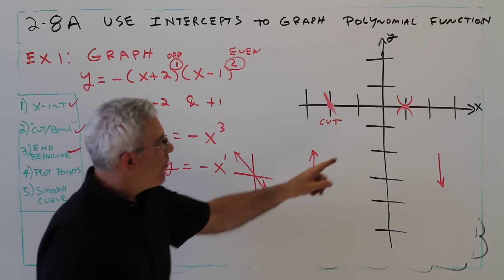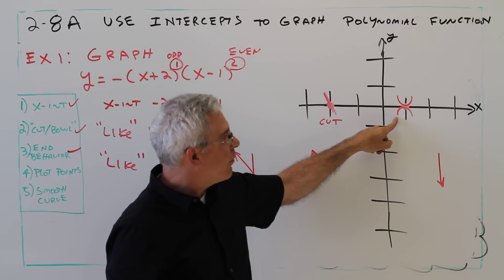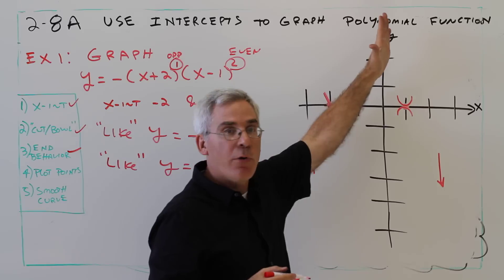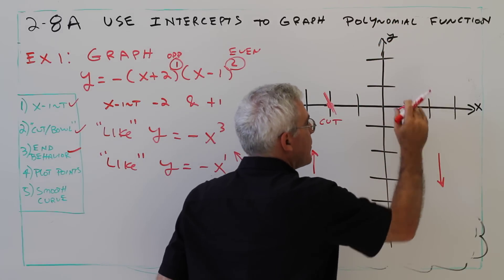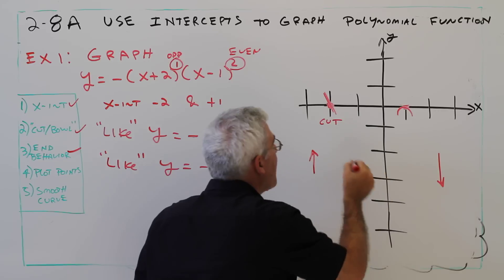So now I know that this is the correct bowling pattern. Because if it's going to be going down here, it can't be bowling up forever. So it's going to be bowling down.